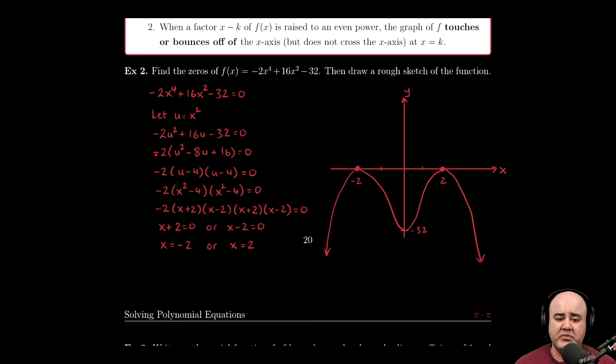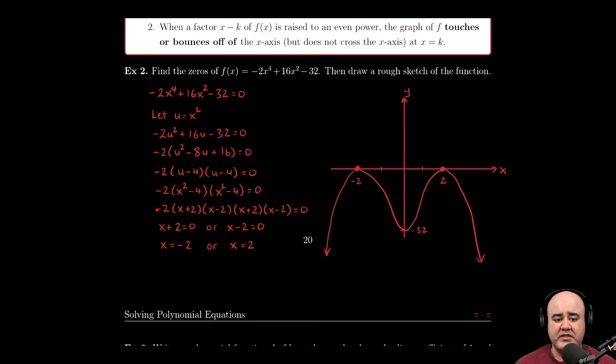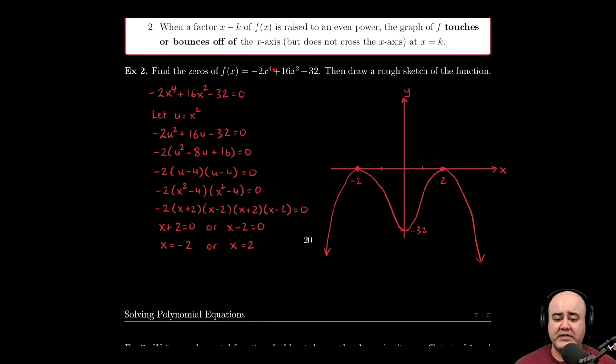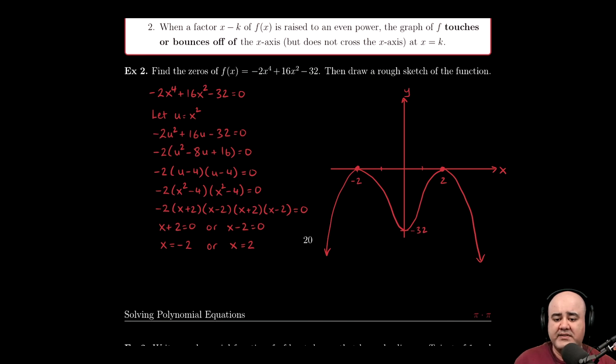And finally, the negative two actually comes to our rescue here, it tells us what the end behavior of this quartic equation is going to be. So if it's an even degree, it's either up, up or down, down. If the leading coefficient is negative, then we know that the end behavior on both sides has to be the function going down to negative infinity.